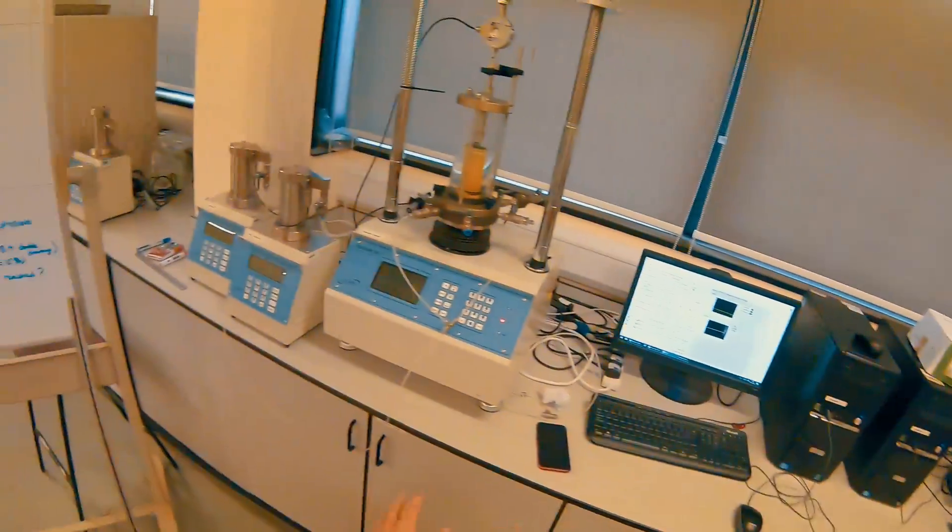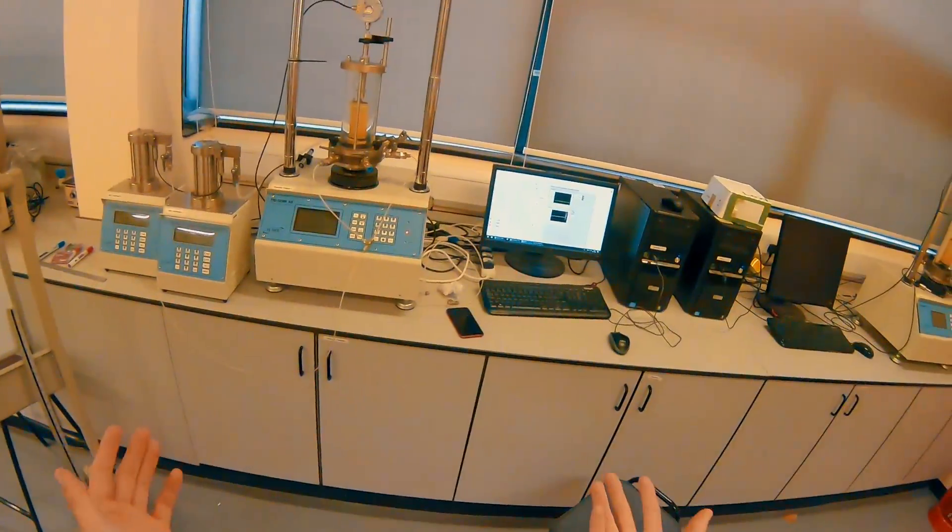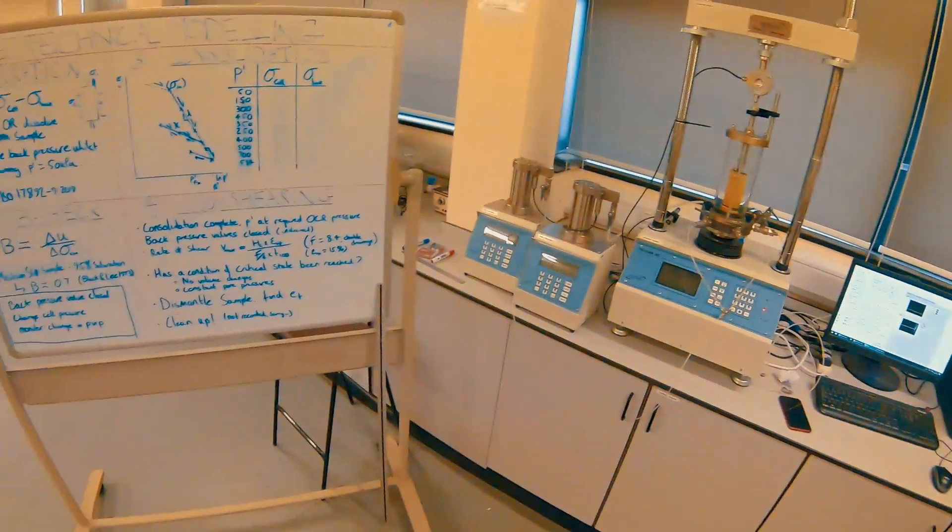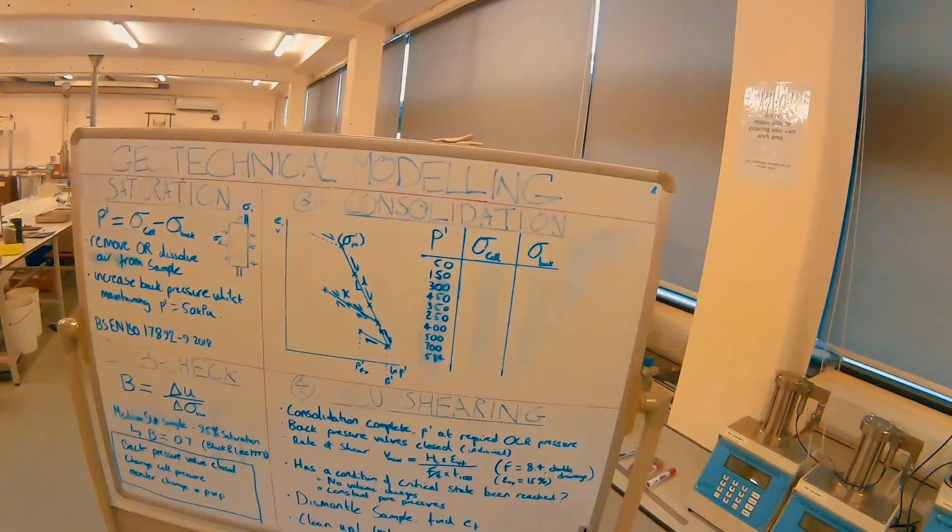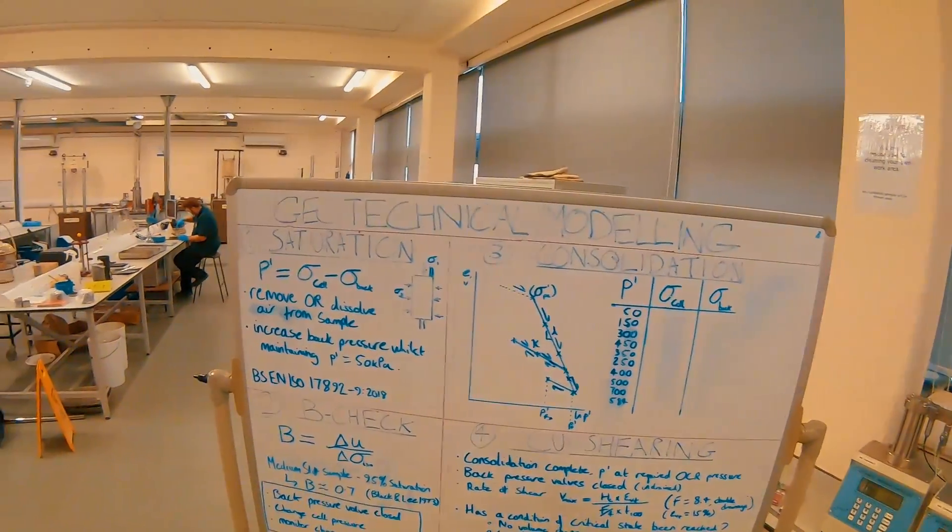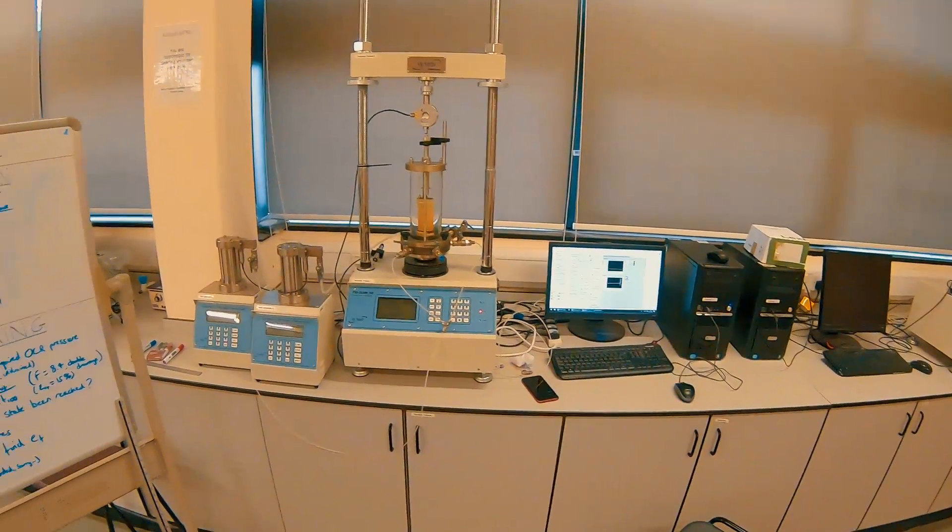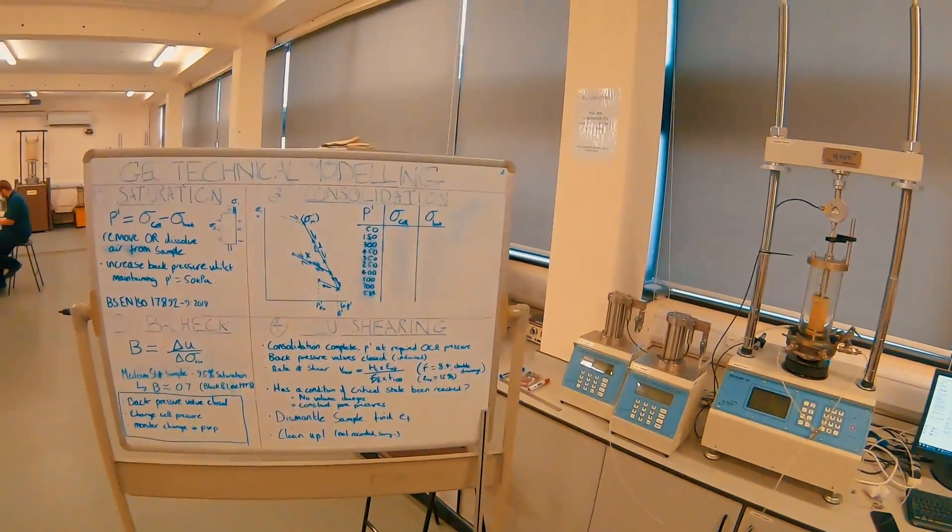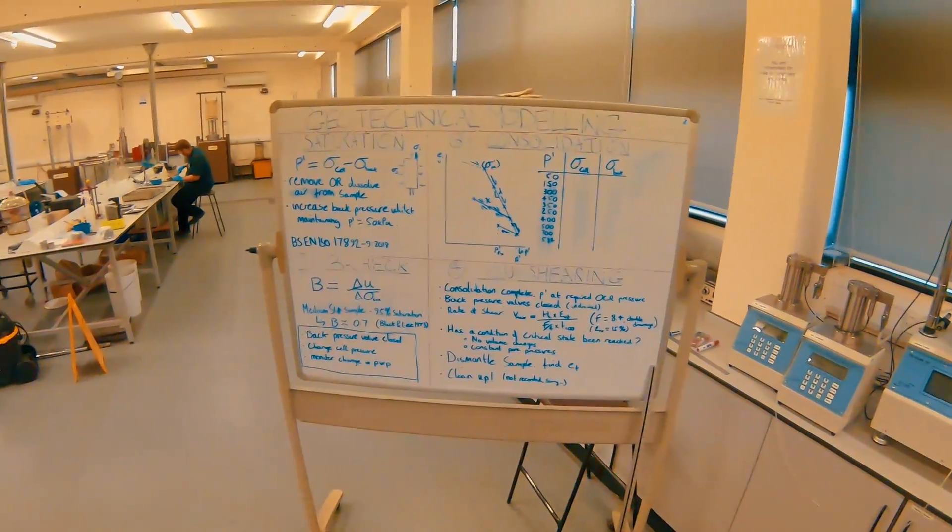So we'll let that happen—you don't need to watch this. We'll return in the next video and look at consolidating our sample. We're going to work out the cell pressures and the back pressures needed to get our p-dash values, and then we can go through the process of consolidating our sample and changing our voids ratio. Thanks for watching this one—we'll see you in the next one.